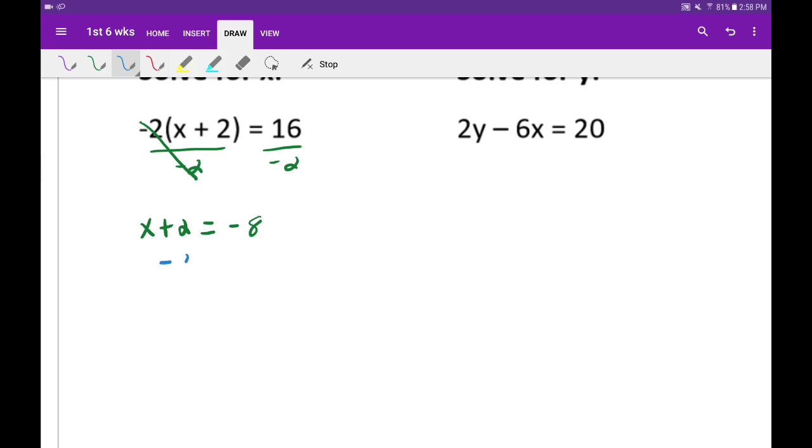Subtract 2 both sides. Those cancel out. And we get negative 10. So it works the same way either way.